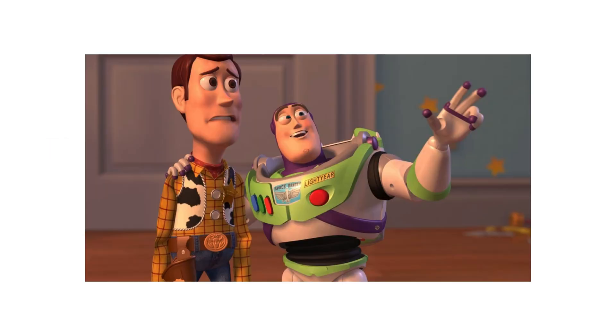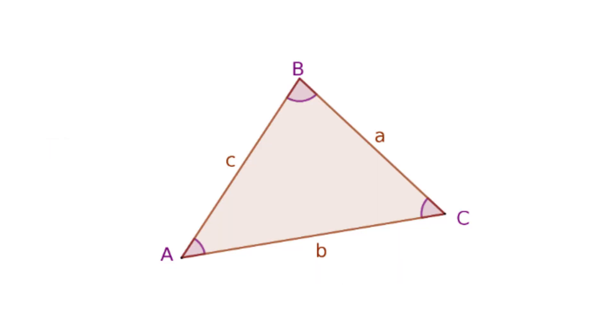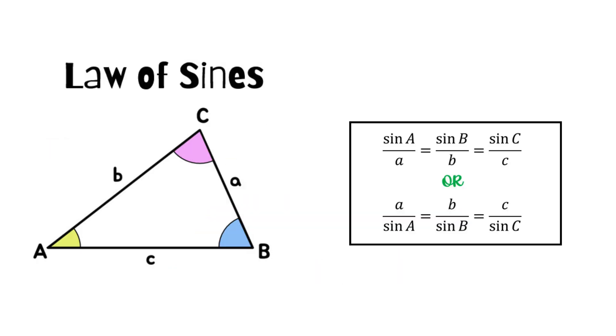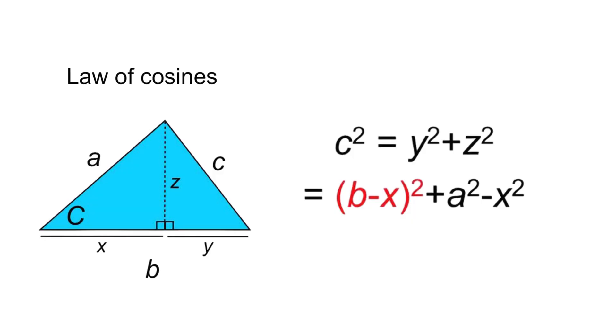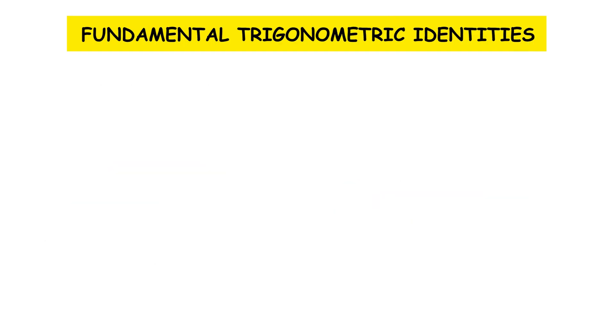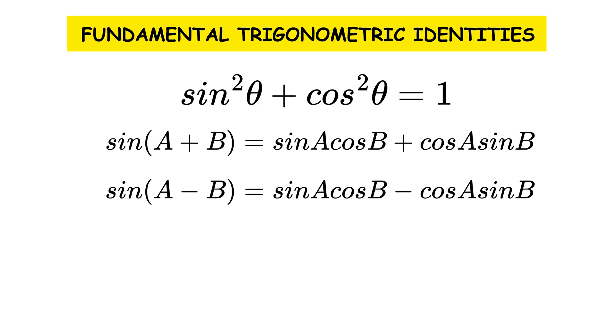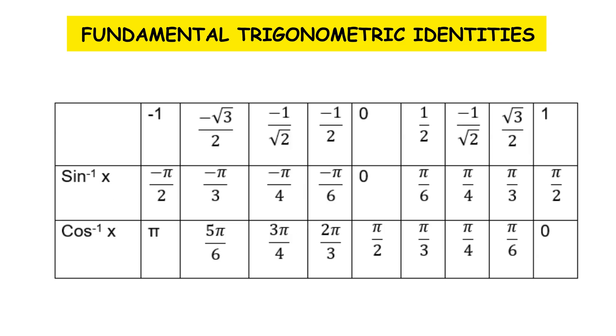In addition to solving right triangles, it addresses oblique triangles through laws such as the law of sines and the law of cosines. It includes fundamental trigonometric identities such as sine squared theta plus cosine squared theta equals one, sum, difference, and product formulas, as well as inverse functions to determine angles from known ratios.